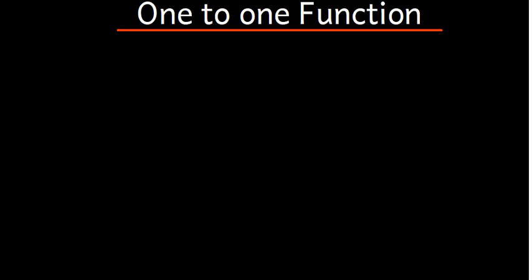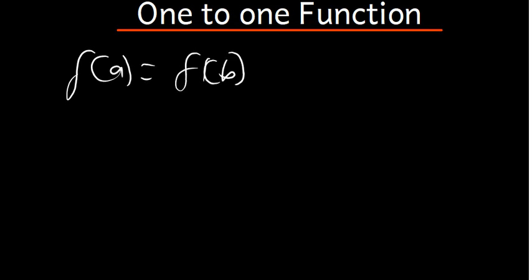Let's talk about one-to-one functions. So how do you know that a function is one-to-one? A function is said to be one-to-one if f(a) is equal to f(b), then we conclude that this function is one-to-one.